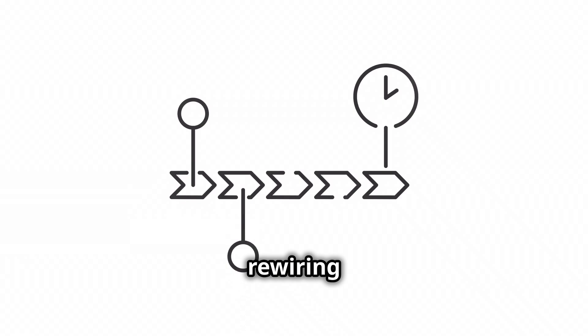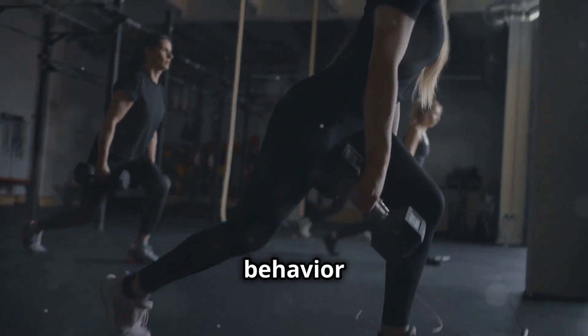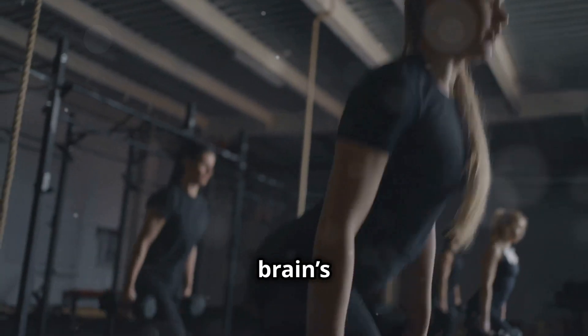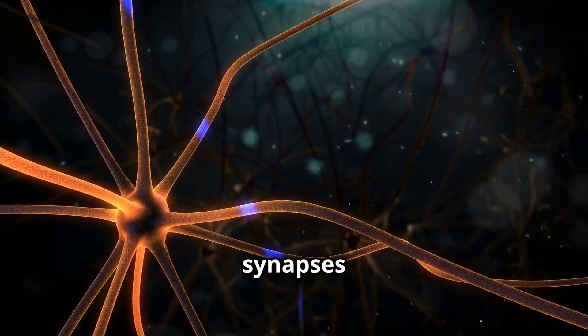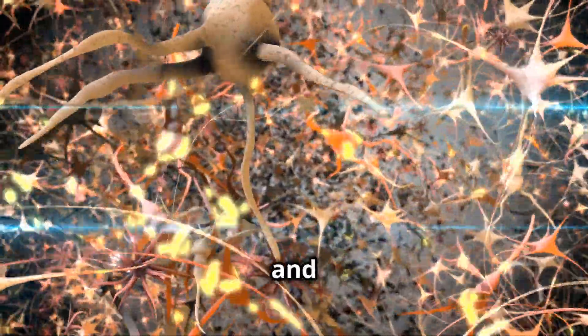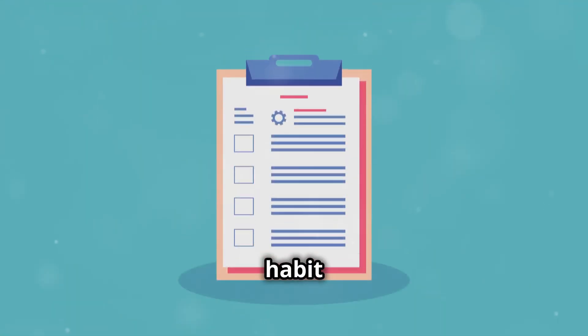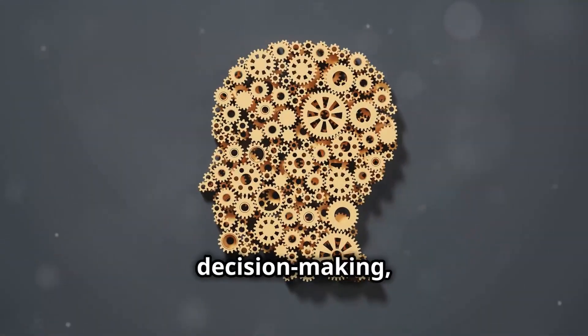By month three, the rewiring process has reached its peak. What was once a conscious, effortful behavior has now become part of your brain's default mode. This is due to long-term potentiation, a process where synapses strengthen with repeated activity. Essentially, your neurons are firing more efficiently, and the brain networks involved in this new habit are now well-established. Your prefrontal cortex has more control over decision-making,